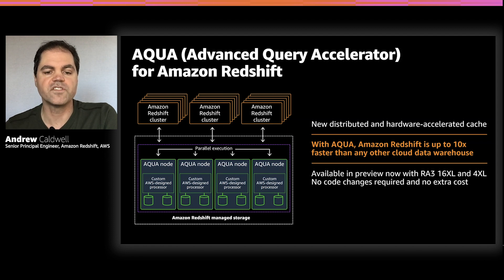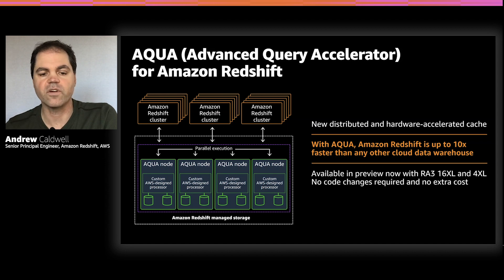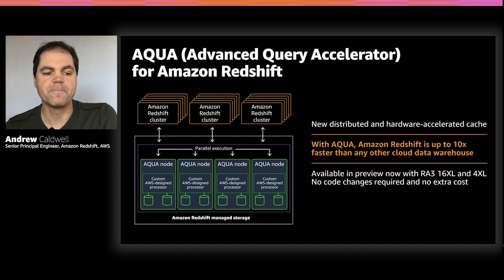Aqua enables Redshift's RA3 nodes to execute queries at up to 10x faster than any other cloud data warehouse. And it is 100% compatible with Redshift because your Redshift cluster is still driving and still manages query execution. On December 1st, we announced that Aqua is available for anyone to preview, and it will be in production in January.